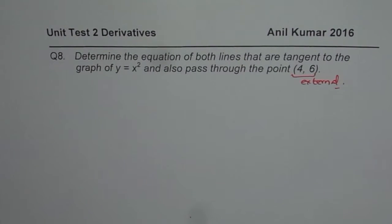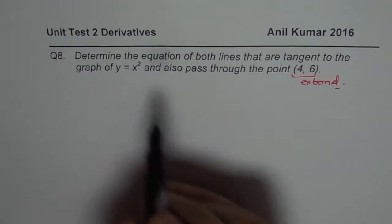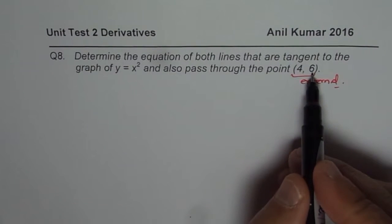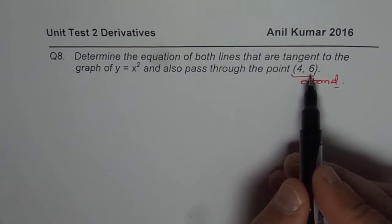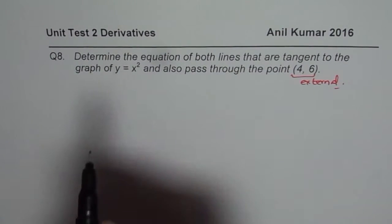Through this external point on the curve y equals x squared, we could actually have two tangents. Therefore the question asks us to determine the equation of both lines that are tangent to the graph of y equals x squared. This is an external point from where we can have two tangents to y equals x squared.